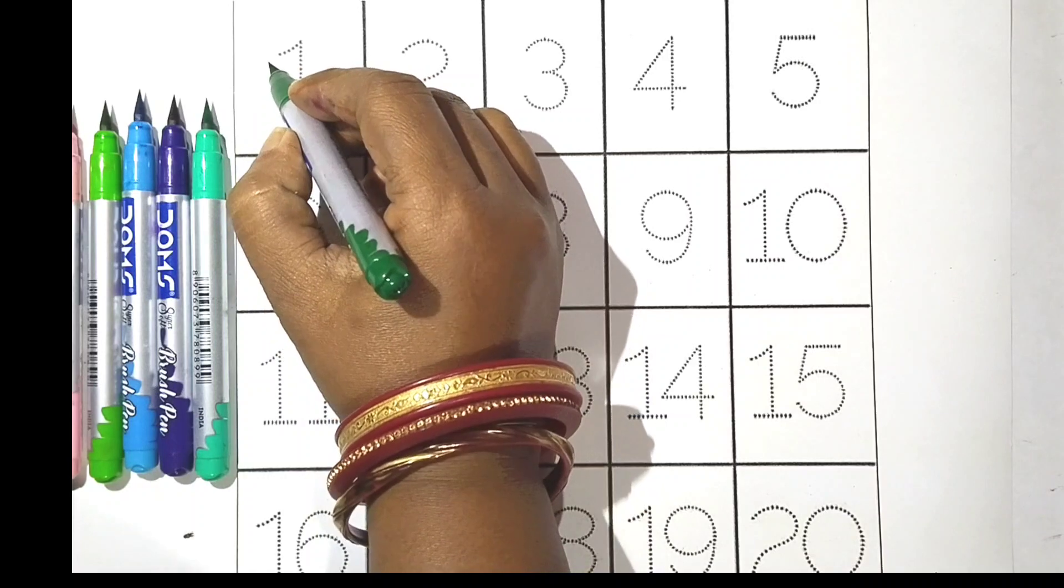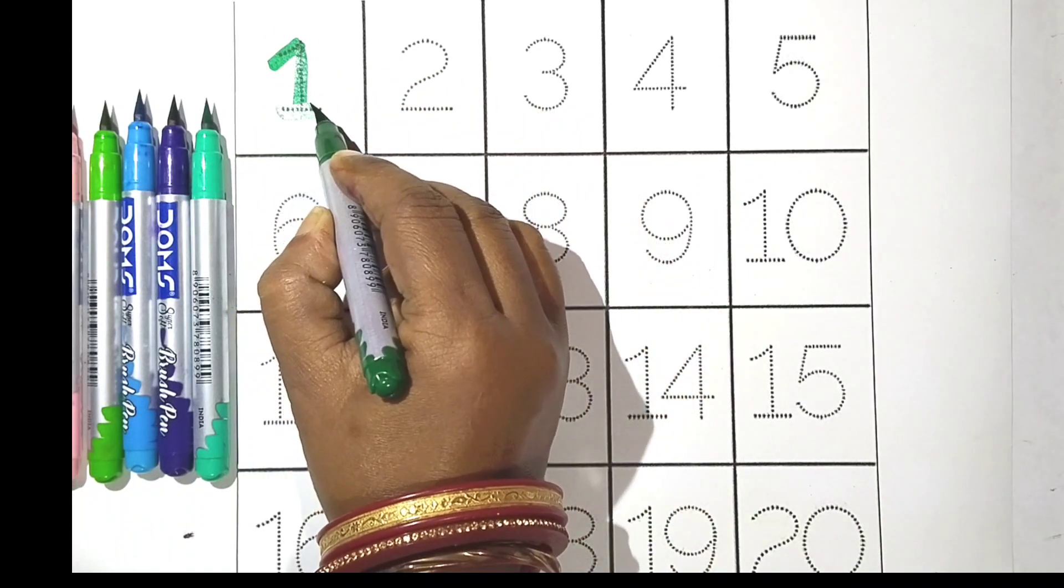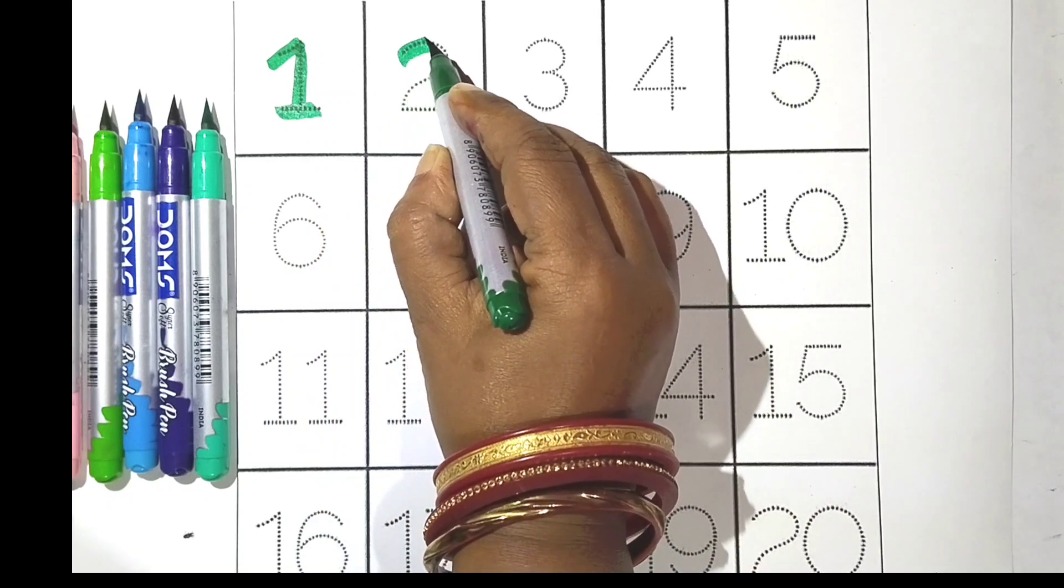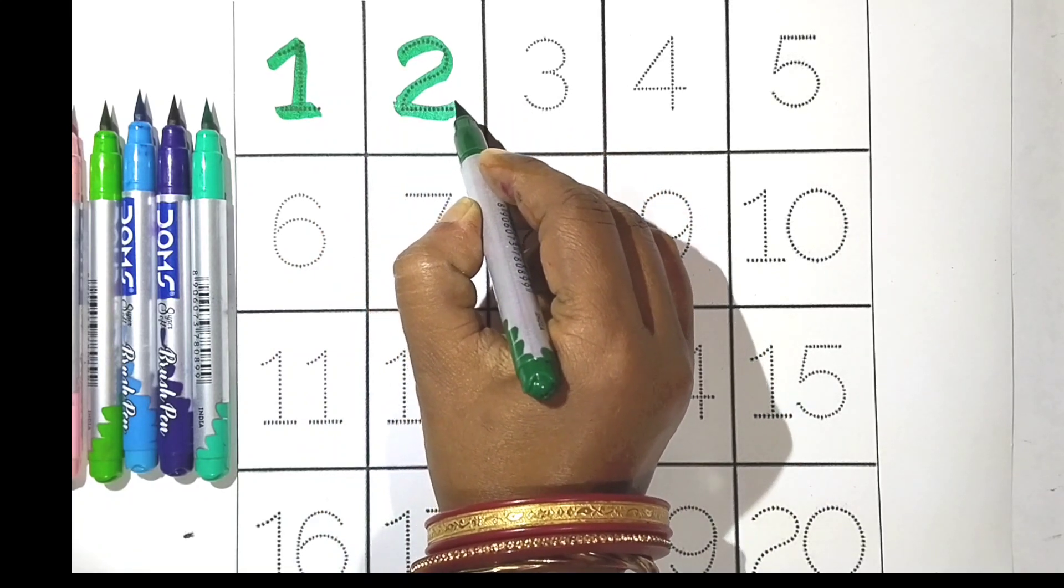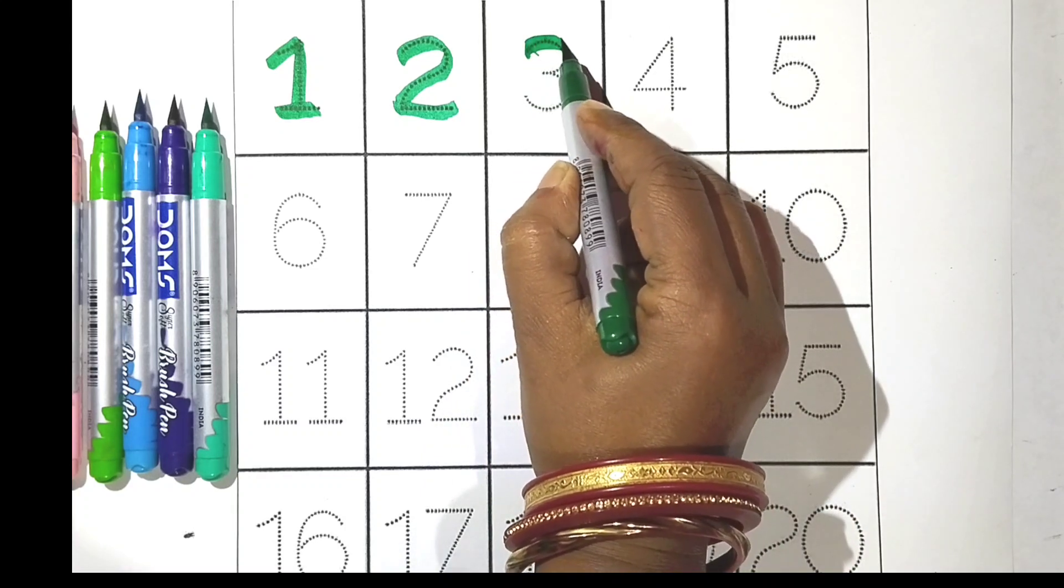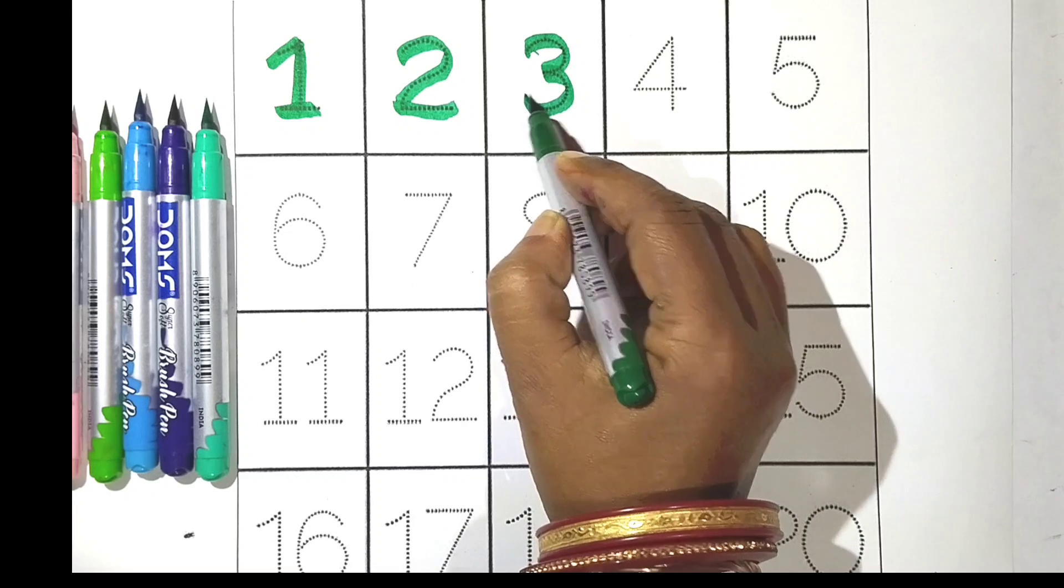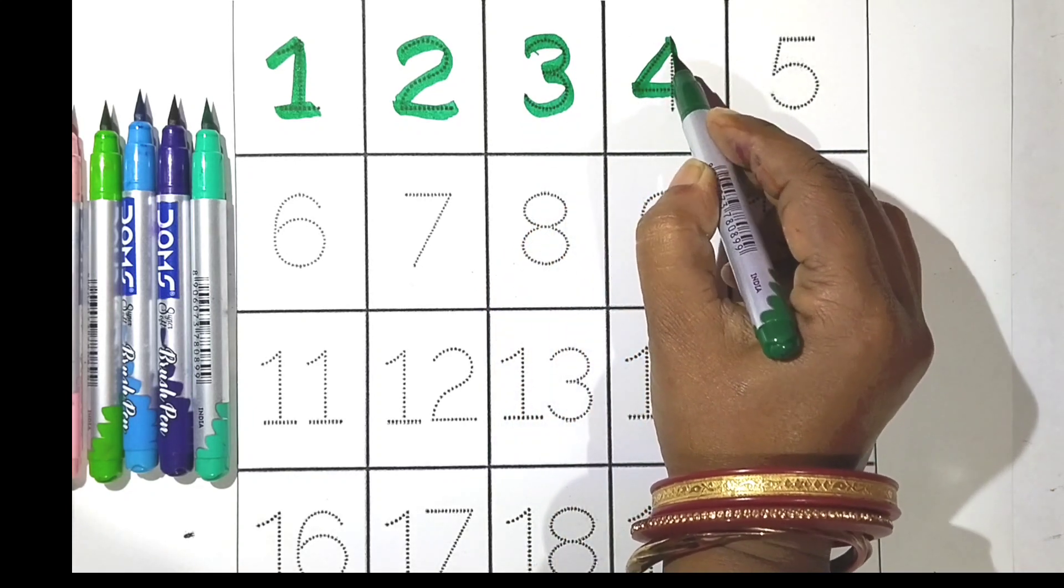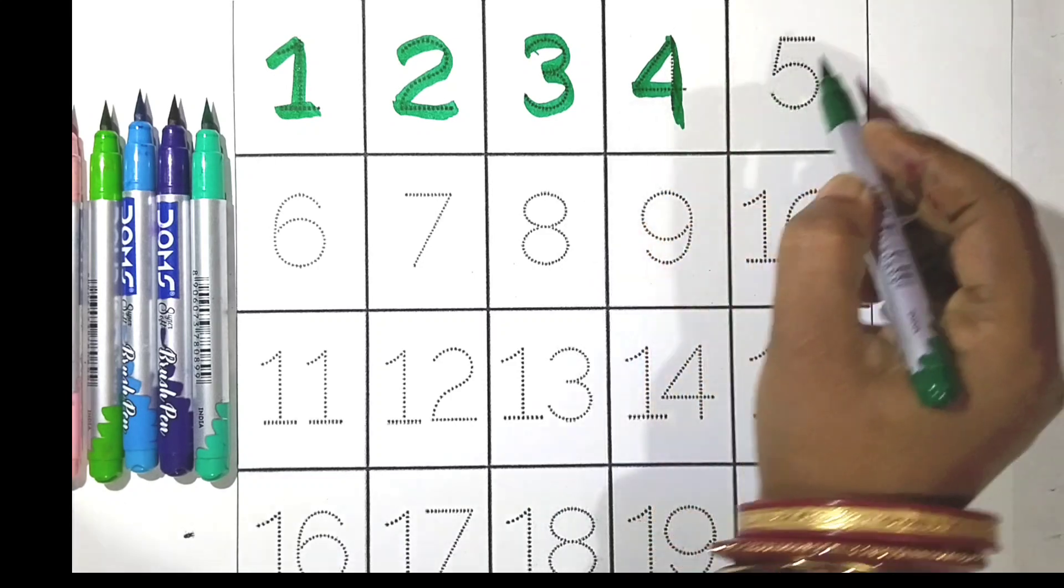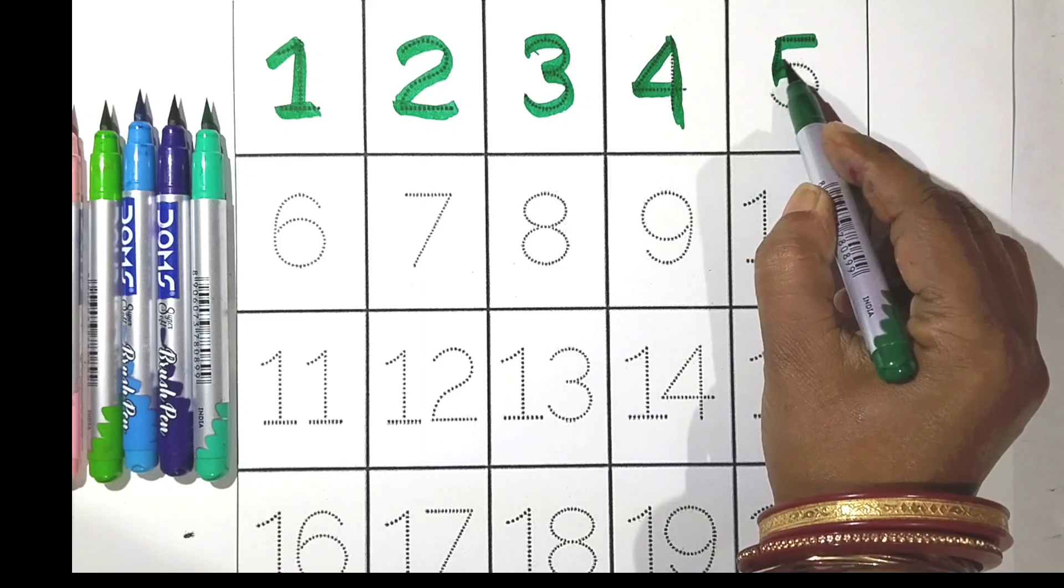One. One. One. Two. Two. Two. Three. Three. Three. Four. Four. Four. Five. Five. Five.